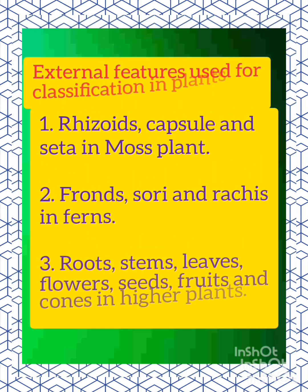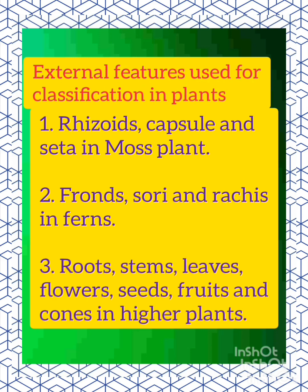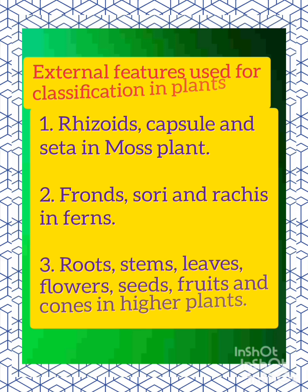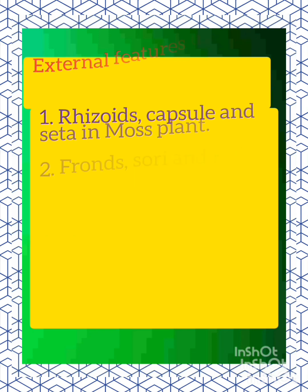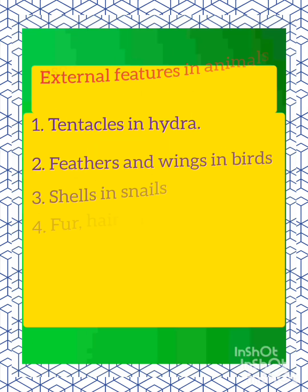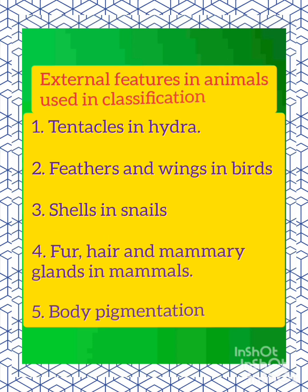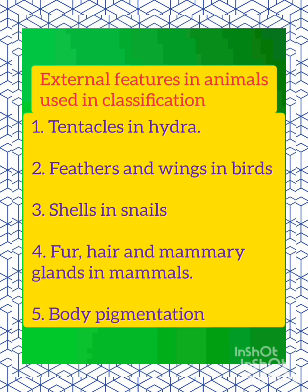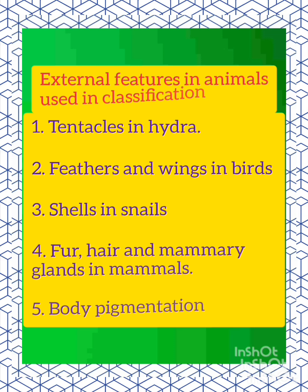The external features used for classification in plants and animals include tentacles in hydra, feathers and wings in birds, shells in snails, fur, hair and mammary glands in mammals, and body pigmentation.